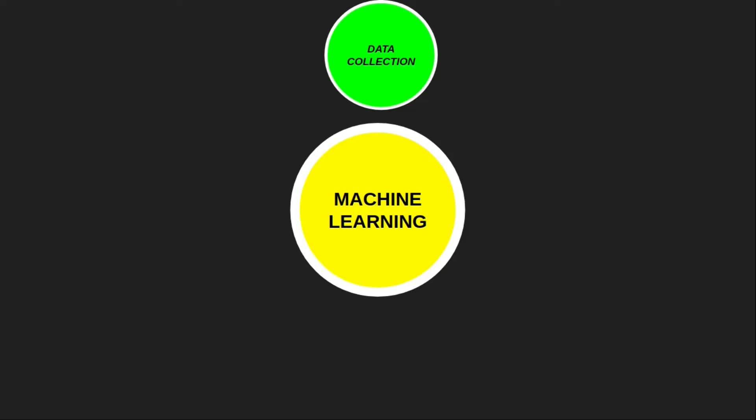This is the first step of the machine learning life cycle: data collection. Some of the data collection sources are websites — we collect data from websites using web scraping techniques. If we use Python as a programming tool, we can use web scraping libraries such as BeautifulSoup, Selenium, and many more to retrieve data from websites. Another source is past examples or historical data collected in our industry from previous years.